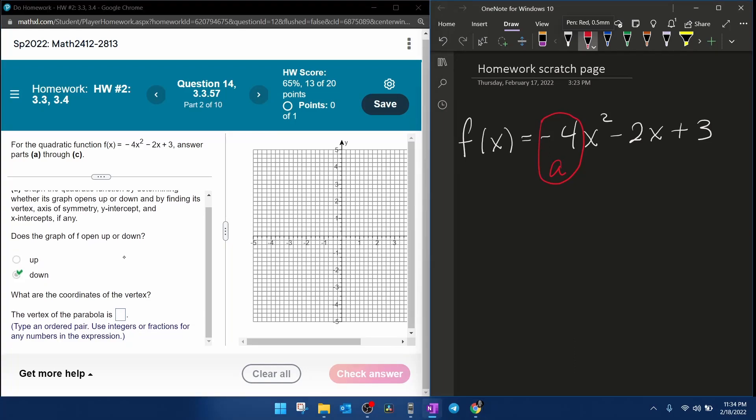Next part, they want the coordinates of the vertex. So we're going to need the values of a, b, and c, and then we can find the values of h and k. h is negative b over 2a, which is minus a negative 2, over 2 times negative 4. However, I have an odd number of negatives, which means my outcome will be negative. That's going to be 2 over 8, which reduces to 1 fourth.